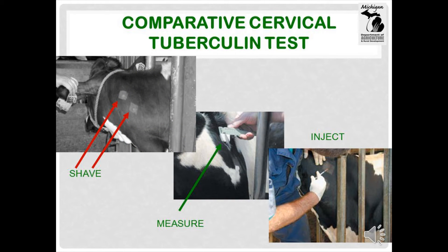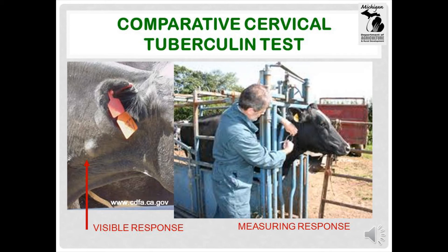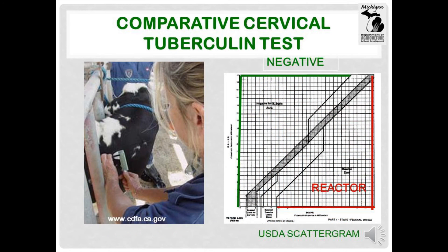For the CCT, the neck is shaved in two places as shown on the left of the slide. The skin thickness is measured with calipers and the thickness recorded for both places as shown in the middle slide. Then the veterinarian injects avian or bird tuberculin into one shaved area and bovine or cattle tuberculin into the other shaved area. The tuberculin is injected between the skin layers, or intradermally, as shown on the right. The skin thickness is again measured 66 to 78 hours after injection. Sometimes there is an obvious swelling where the bird or cattle tuberculin was injected. Sometimes there doesn't appear to be any change, but the skin thickness when measured with calipers has increased compared to before the injection. In any case, the difference in skin thickness before and after injection is plotted on the official USDA CCT scattergram shown on the right.